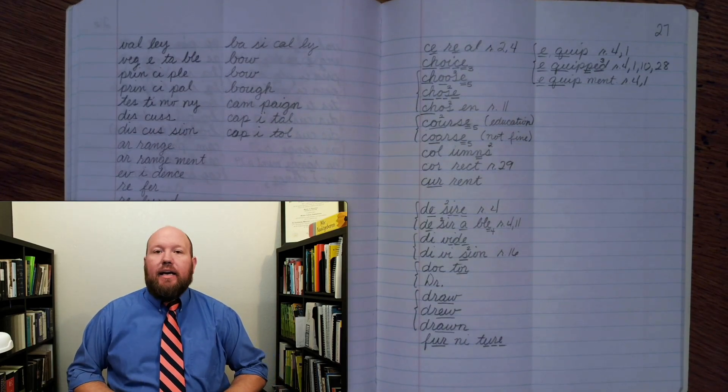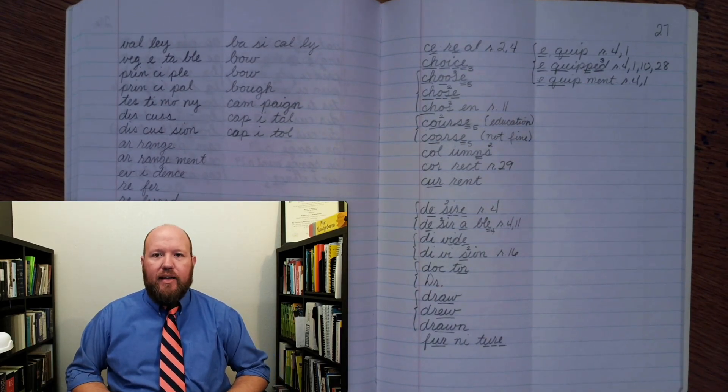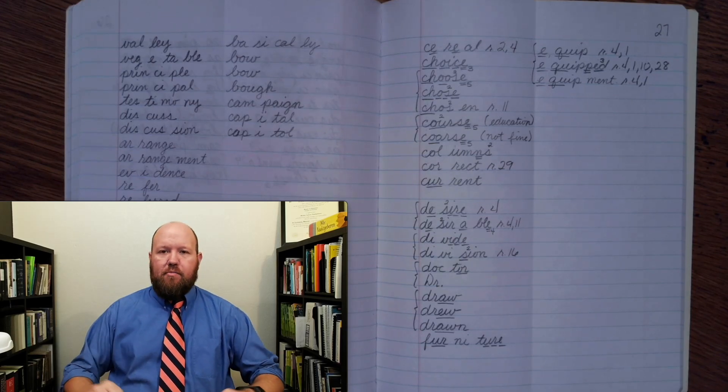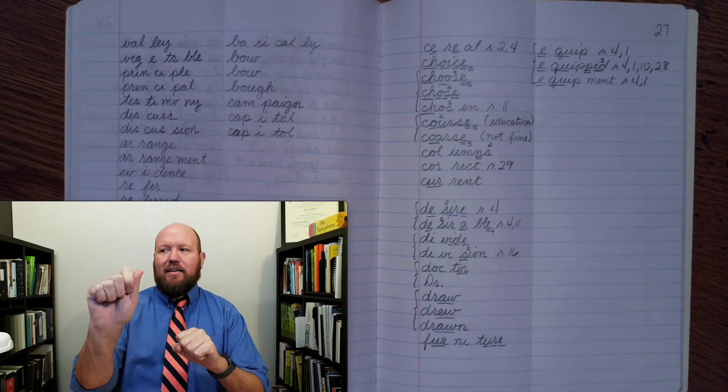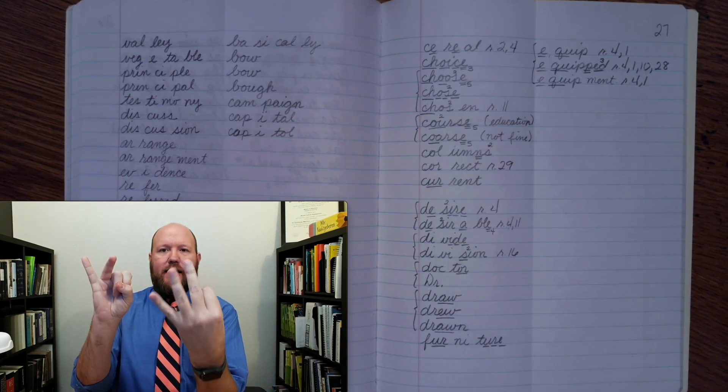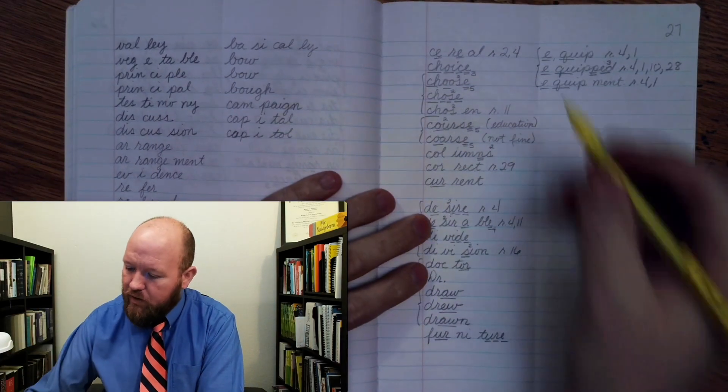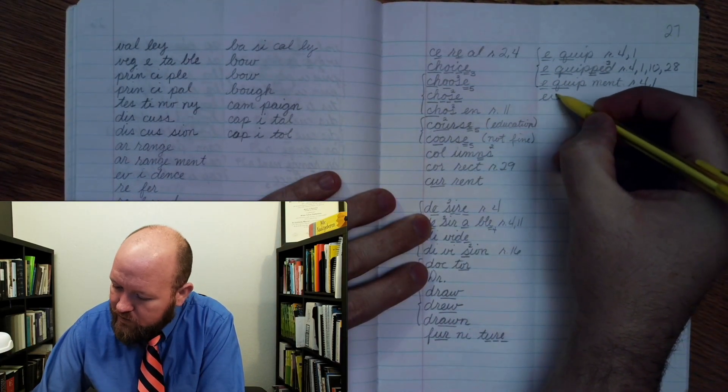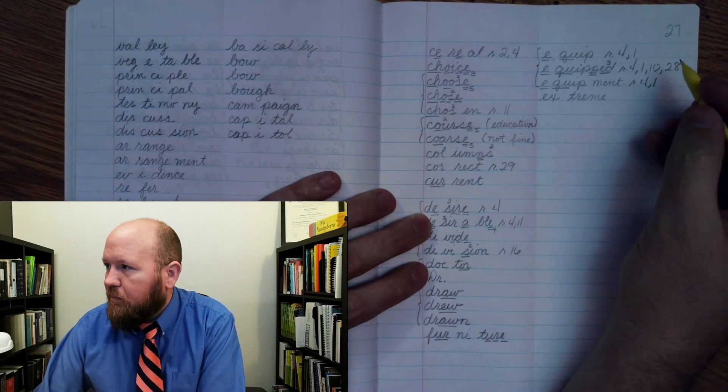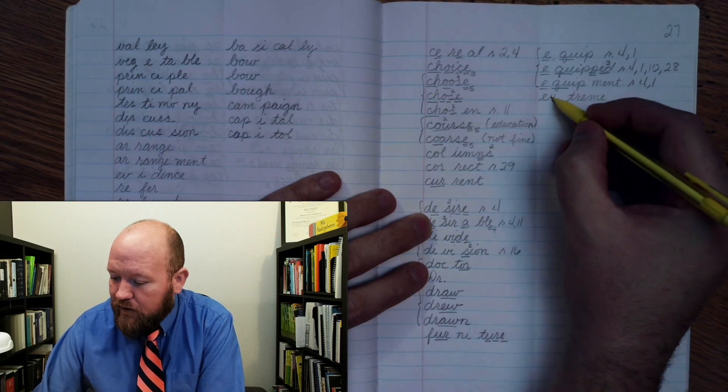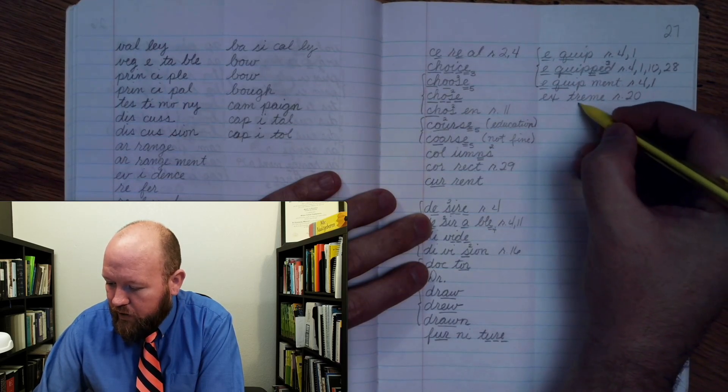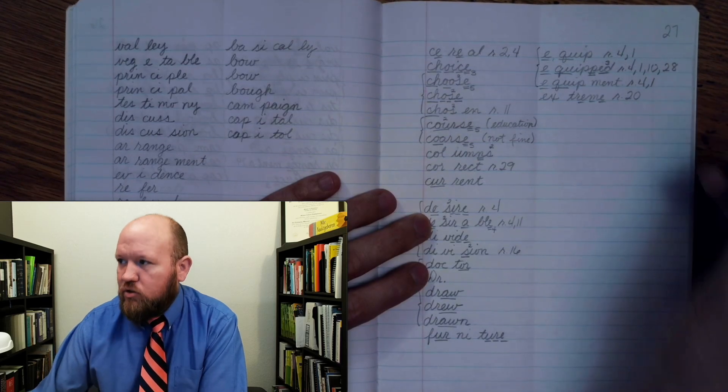The next word is extreme. So something that is very wild is extreme. Extreme, base word extreme. X-treme. E X T R E M E. Markings. X rule 20. T R E once, M once, E once. Extreme.